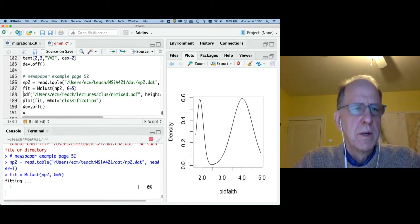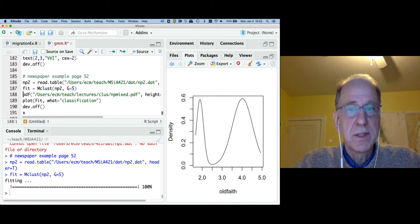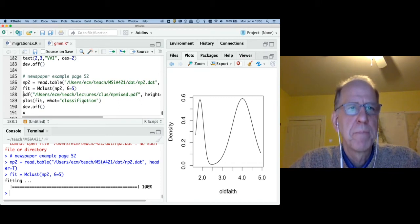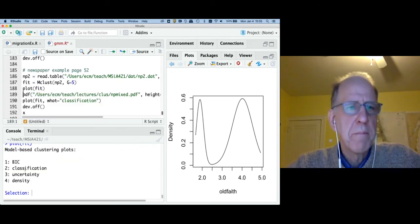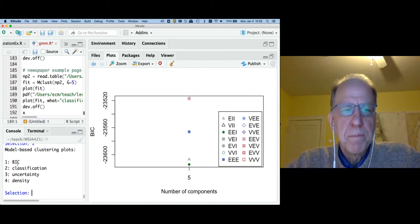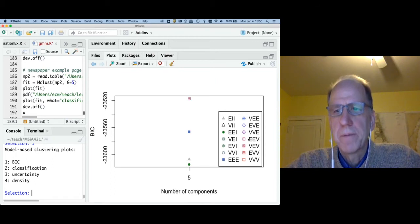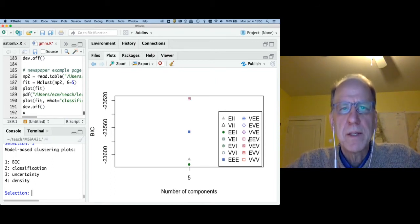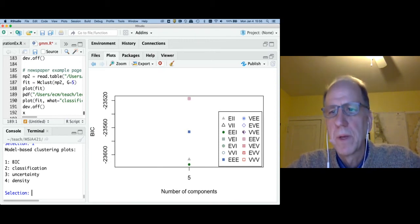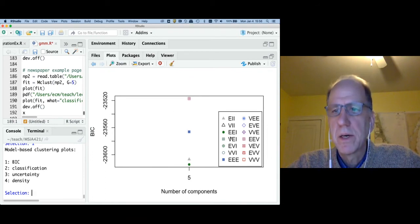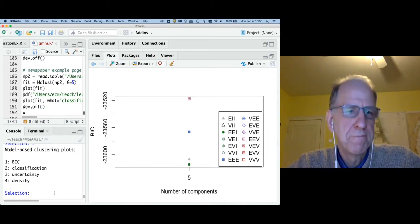You're going to see that this is computationally fairly hard, so that probably took a second to estimate. It wasn't instantaneous. Now, if I plot a fitted object, you're going to see I get a menu. The first plot gives the BIC statistic for all of the different models that R has tried. We like to have large BIC values. What that means is negative values closer to zero are better than negative values further from zero. And what R has done is selected the EEV model. So if I hit two,